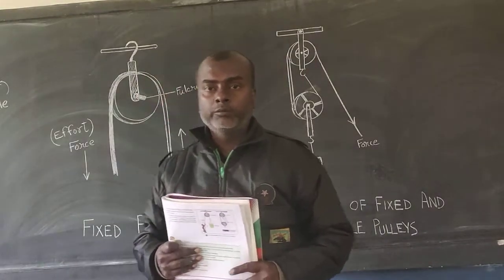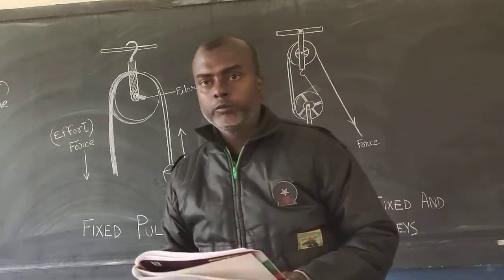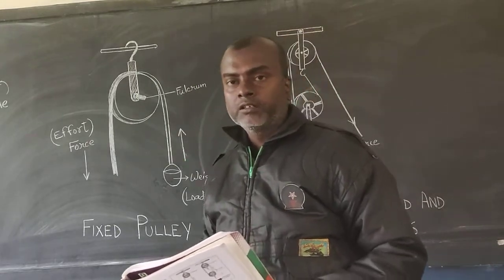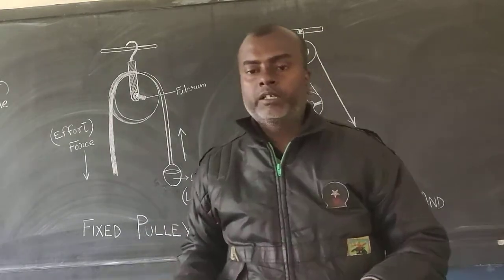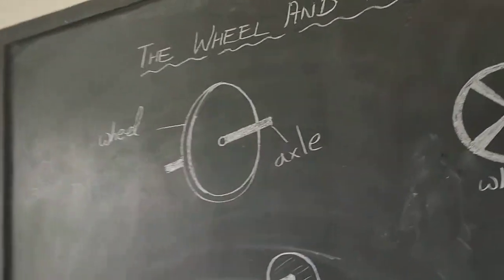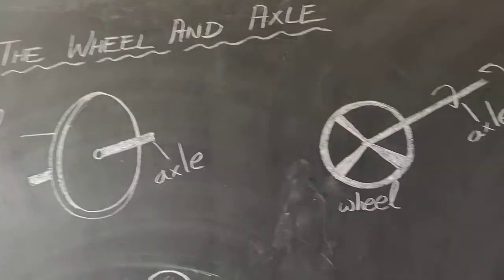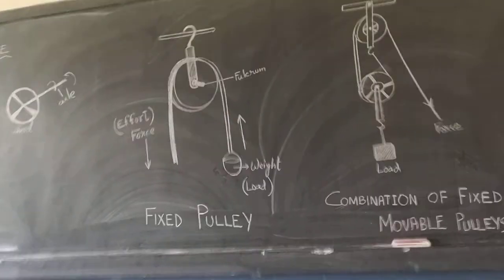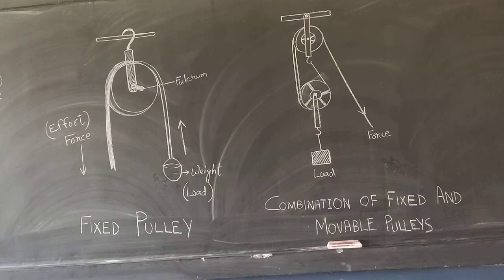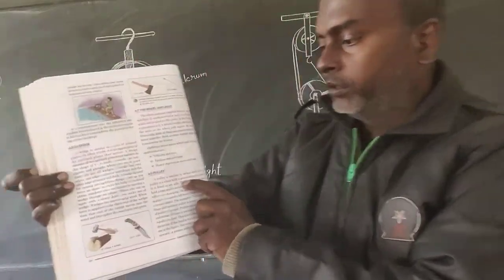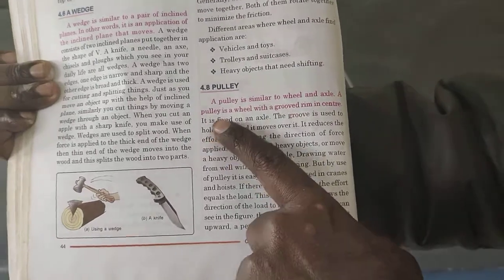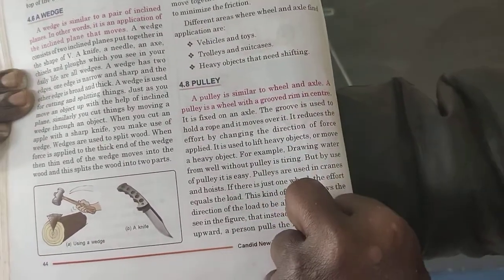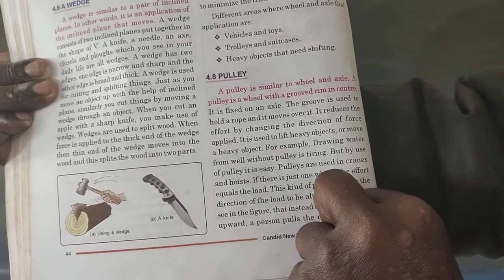The next topic is the pulley. A pulley is an example of the wheel and axle. As you can see from the diagram, the wheel and axle diagram and the pulley diagram represent the same thing. As stated in your book on page 44: a pulley is similar to a wheel and axle. A pulley is a wheel with a grooved rim in the center.